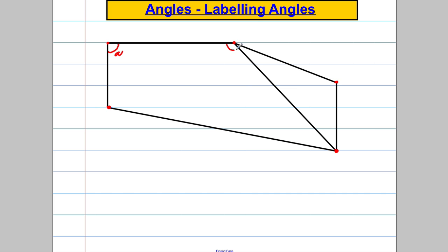You might call this angle B, you might call this one C, this one D, this one E, this one F, and this one G. Now there's no harm in doing that — sometimes we do label angles this way and it will be like that in the exam.